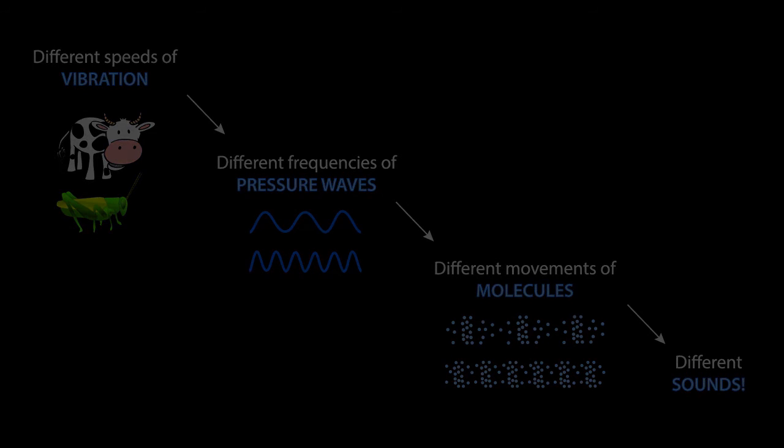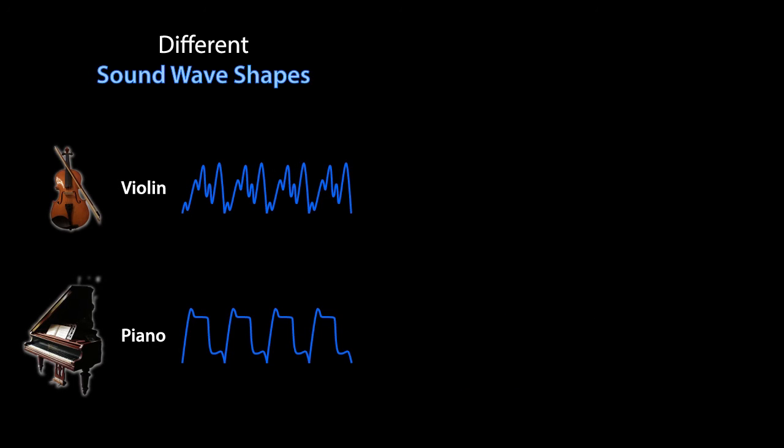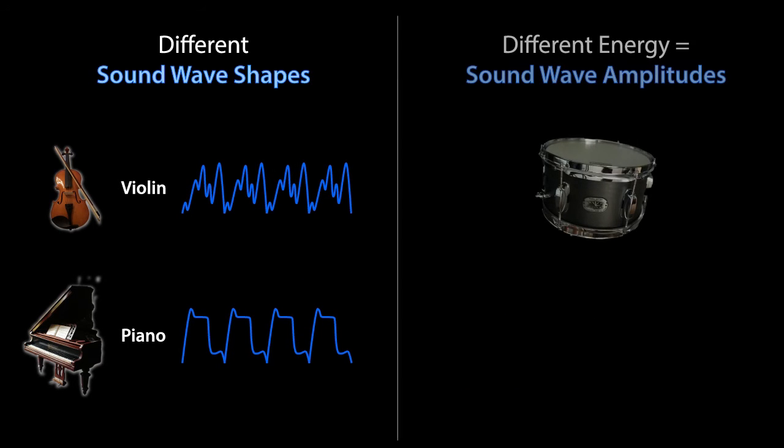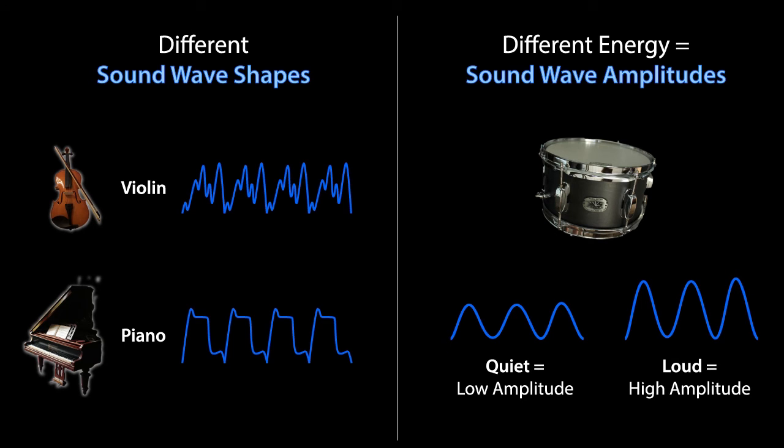And different sounds are also made by the shape of the sound wave, and the loudness of a sound depends on the amount of energy from the source. For example, hitting a drum with little energy makes a sound wave with low amplitude, and a higher energy hit makes the same waveform shape but has higher amplitude. And ta-da! All these different sound waves create the sounds that surround you.